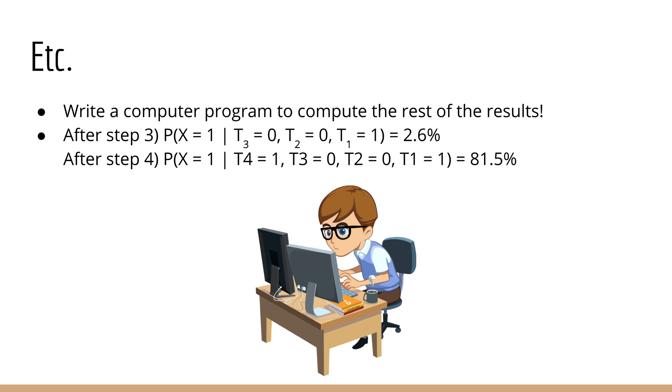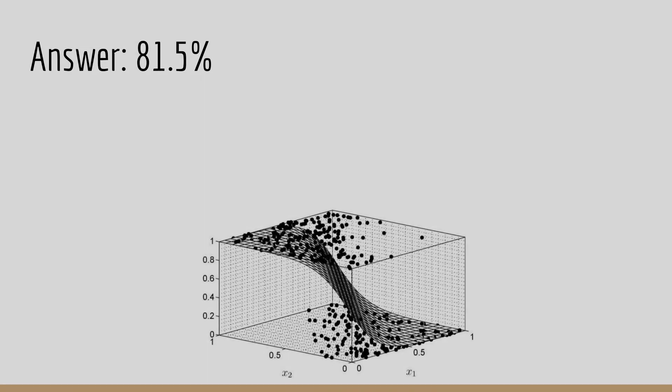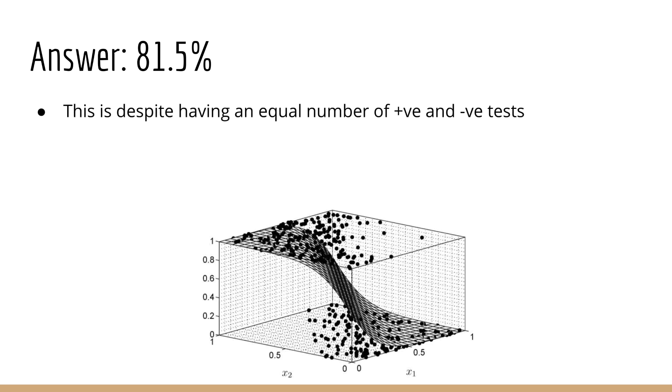This makes sense, since after two negative tests and one positive test, you would expect the probability to fall. If two out of three tests are negative, the probability that you have the virus is very low. However, note that the final result is counterintuitive. Despite the fact that you have an equal number of positive and negative tests, the probability that you have the virus is 81.5%.